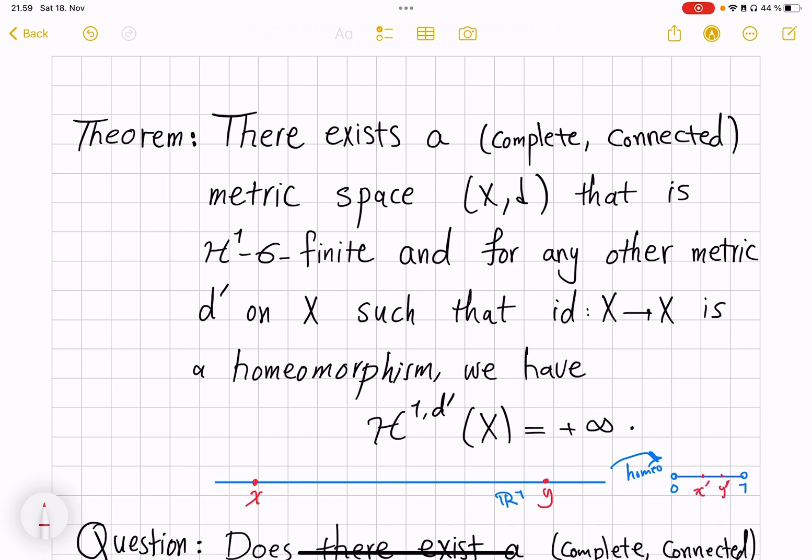whatever their distance under this homeomorphism will become. So let's say x' and y' are the images under that homeomorphism. So this new metric d' of x, y will be Euclidean distance of x' minus y'. So this is a homeomorphism.